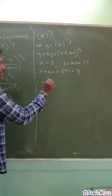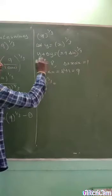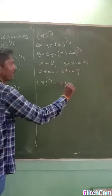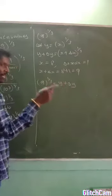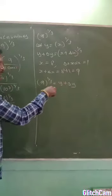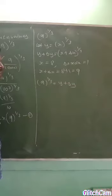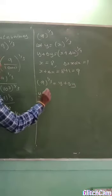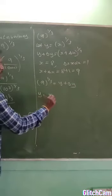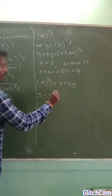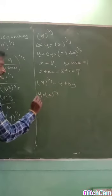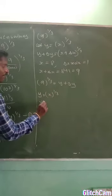So 9^(1/3) can be replaced by y + δy. As usual, we need to find the value of y first. We have y = x^(1/3), and we substitute x = 8.